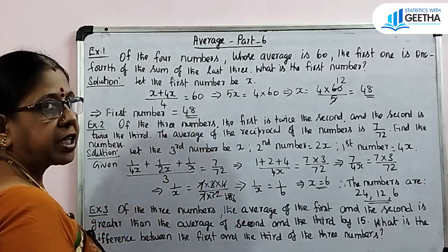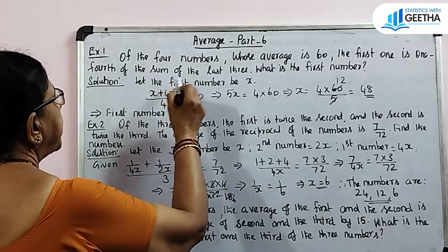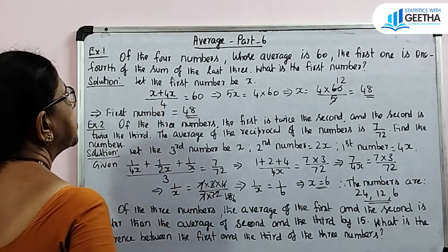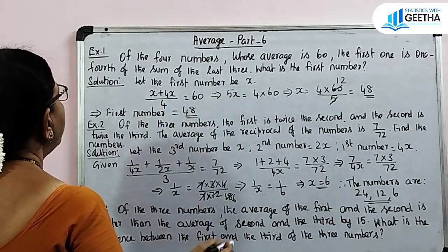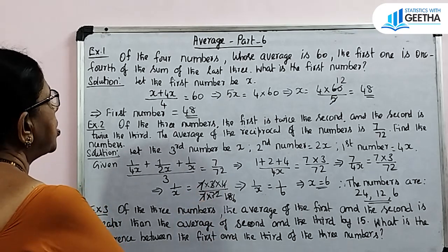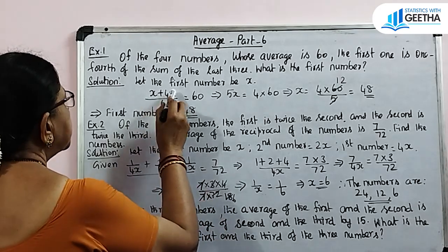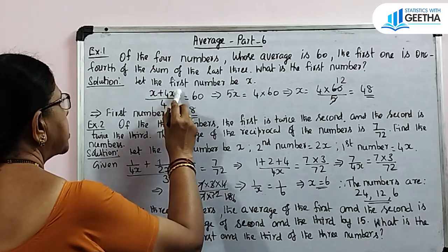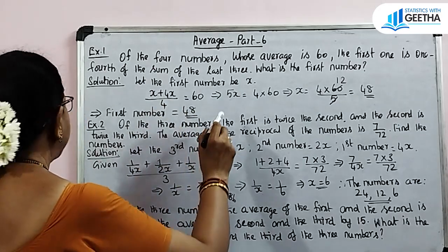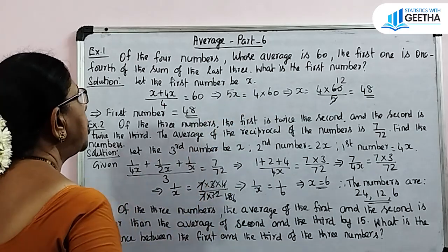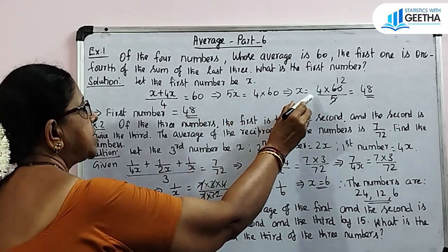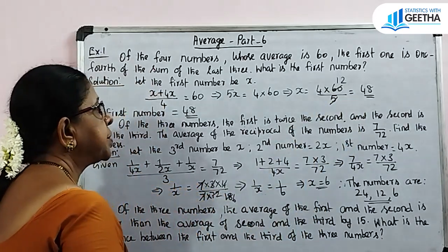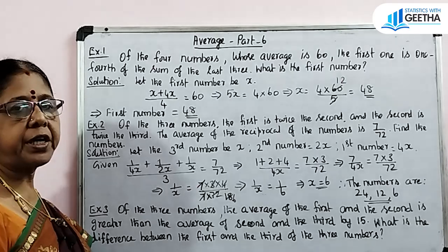Let the first number be x. From the given data, the first number x equals one-fourth of the sum of the last 3, so the sum of the last 3 is 4x. Average: x plus 4x divided by 4 equals 60. That implies 5x equals 4 into 60, so x equals 4 into 60 by 5, which is 48. Therefore, the first number is 48.